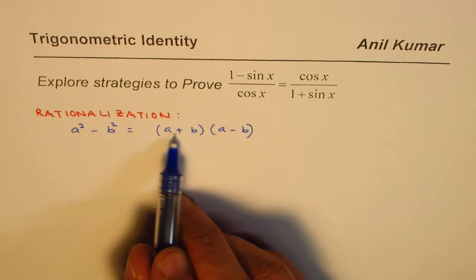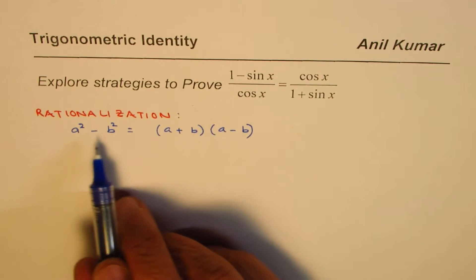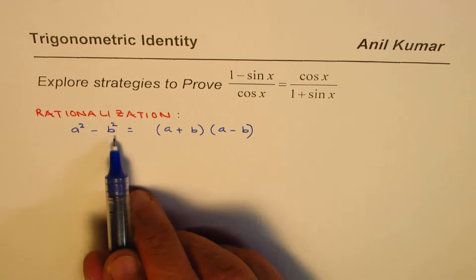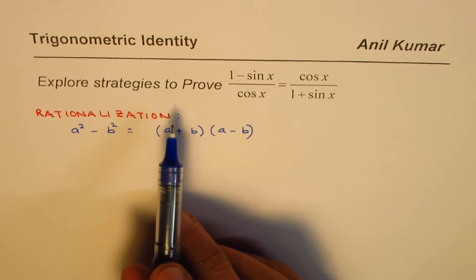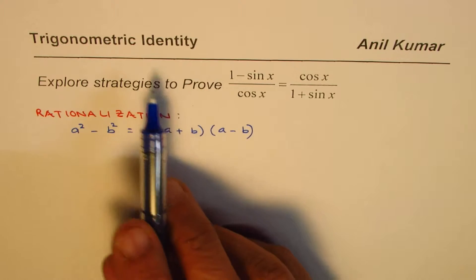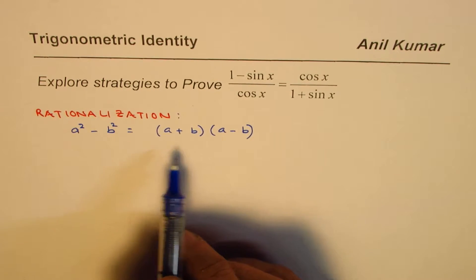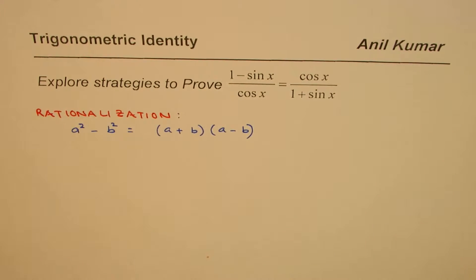So what we get here is that if I multiply sum and difference, I get difference of squares. And that's the strategy which helps us to prove many trigonometric identities.